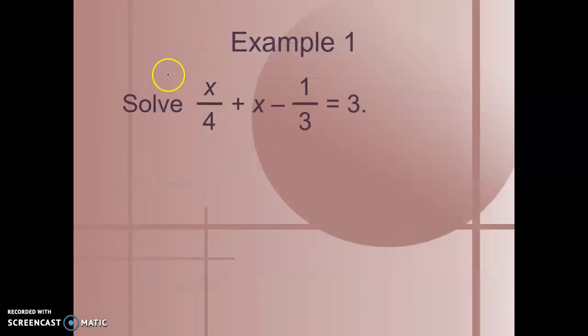Here's your first example: Solve x over 4 plus x minus 1 third equals 3. The first thing that we need to do is find the least common denominator. The least common denominator is 12.